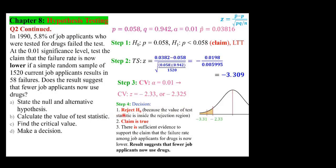We are rejecting H₀, which means we are accepting H₁ — the claim becomes true. There is sufficient evidence to support the claim that the failure rate among job applicants for drugs is now lower. The result suggests that fewer job applicants now use drugs.